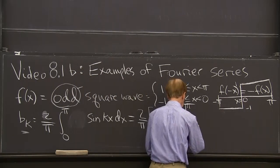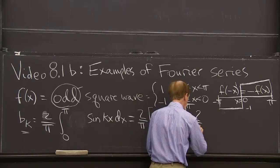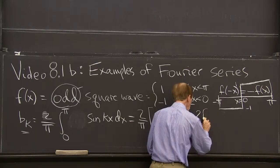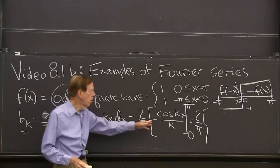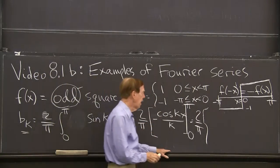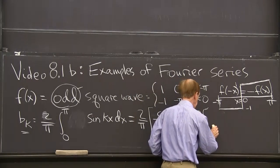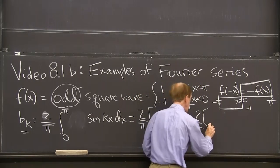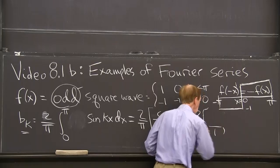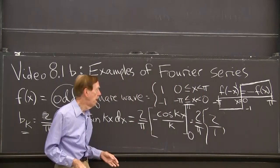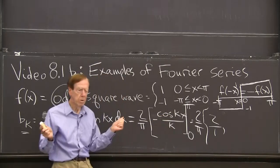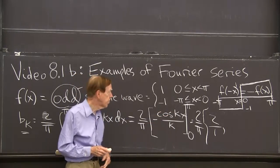So what do I get? I get 2 over pi. For k equal 1, I think I get, so k is 1. The denominator will be 1. And I think the numerator is 2. Yes. When k is 1, I get 2.